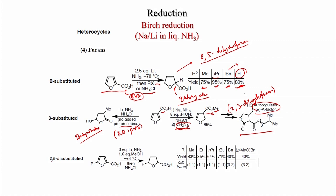For 2,5-di-substituted furan, 2,5-dihydrofuran is again obtained. For R = methyl: 83% yield, but 1:1 cis:trans mixture because both centers are stereogenic. For R = ethyl: 85% yield, 1:1 ratio. For n-propyl: 1:1. For tert-butyl: 1:1. For benzyl: 3:2 ratio with only 40% yield. For p-methoxybenzyl: also 40% yield, 3:2 ratio.